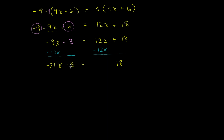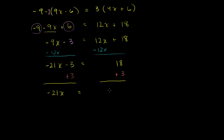Now let's get rid of this negative 3 from the left-hand side, so on the left we only have x terms and on the right we only have constant terms. The best way to cancel out a negative 3 is to add 3 — it cancels out to 0. So we add 3 to both sides. We have negative 21x, and the negative 3 and the positive 3 cancel out. Equals — what's 18 plus 3? That's 21.